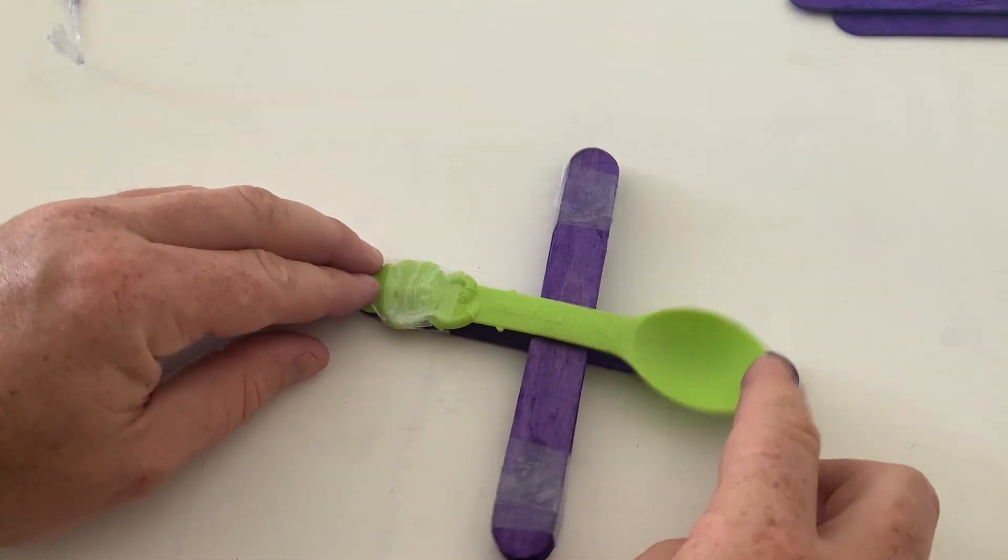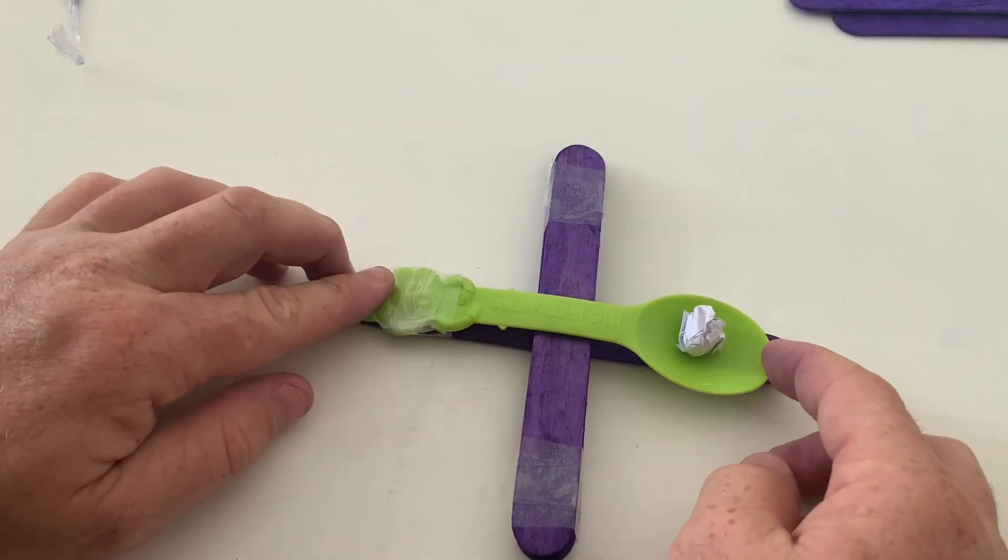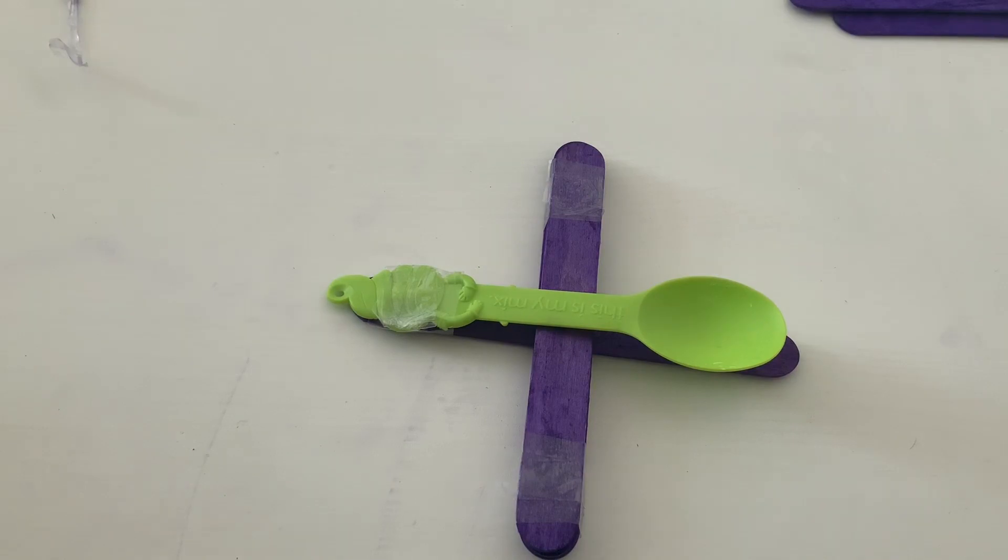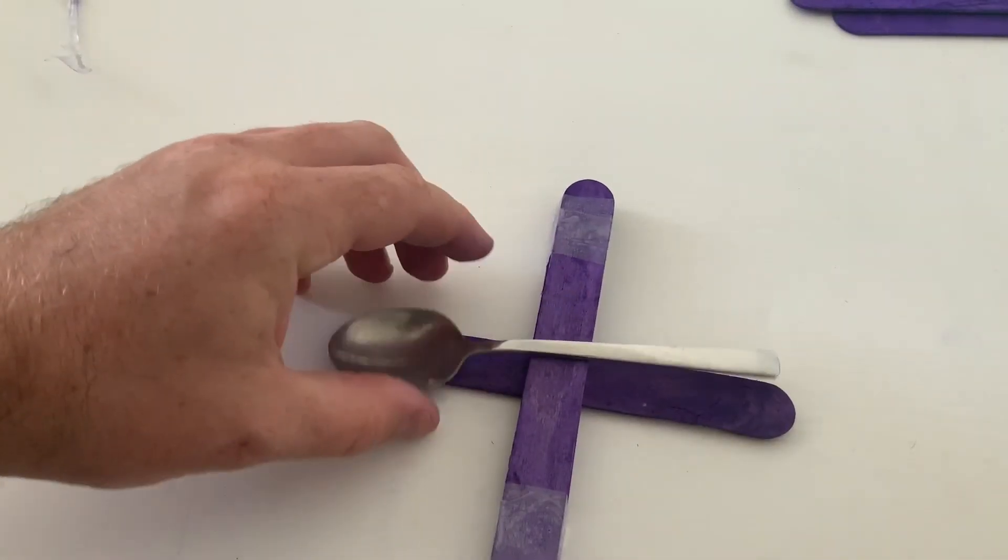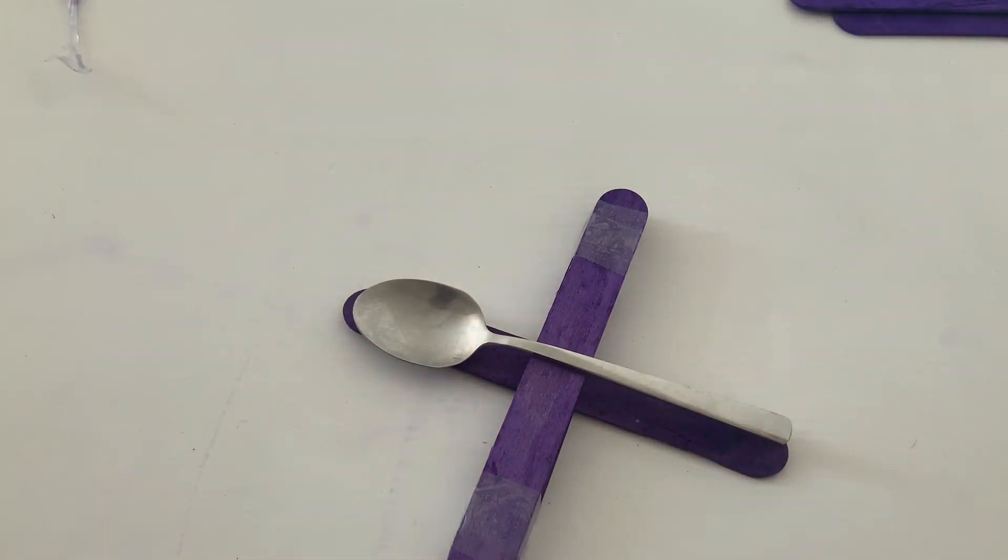Now I can test the flexibility of my spoon. Remember, the catapult needed to be stiff and flexible. Hmm, that didn't go as far. I can do the same again with a different material. This time I'm going to be testing a metal spoon. I wonder how flexible or how stiff this will show.